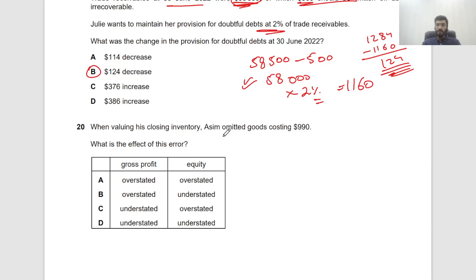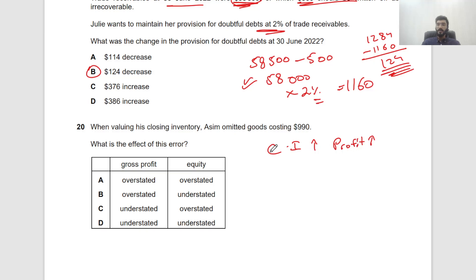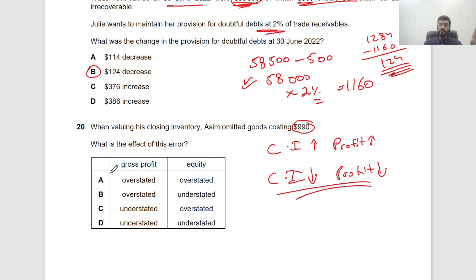Question 20: When valuing closing inventory, goods costing $990 were omitted. Closing inventory goes down, so profit goes down — closing inventory and profit move in the same direction. Gross profit will be understated, and equity will also be understated because lower net profit flows into capital.